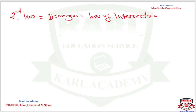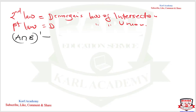The first law was De Morgan's Law of Union. In De Morgan's Law of Intersection, we say that the complement of A intersection B is equivalent to A complement union B complement. That is the second law of De Morgan's.